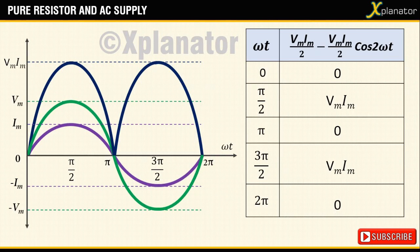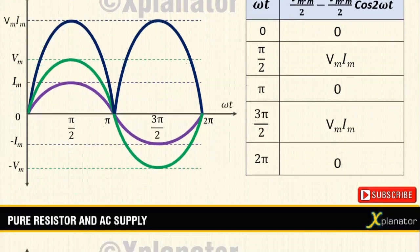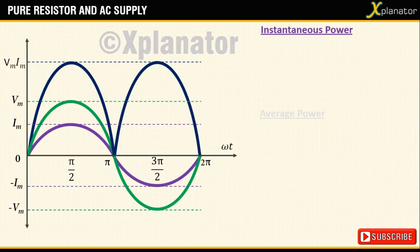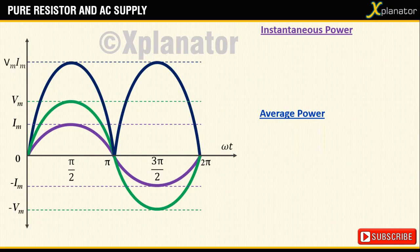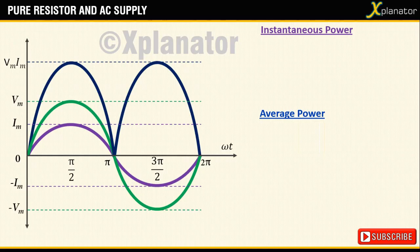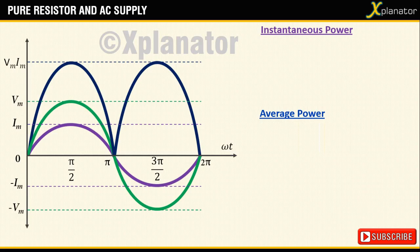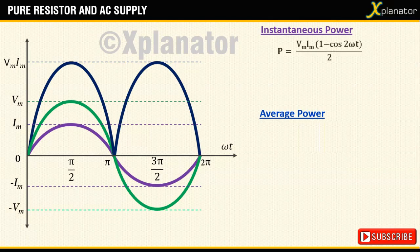The power consumed in a circuit is classified into two types. First is instantaneous power and second is average power. Instantaneous is what is consumed at the moment, while average is taken over the entire working cycle. The equation which we have derived was for instantaneous.